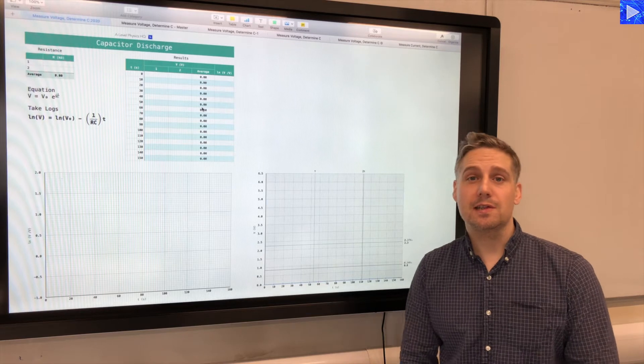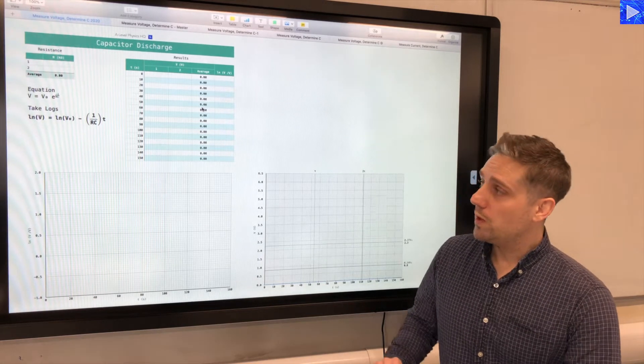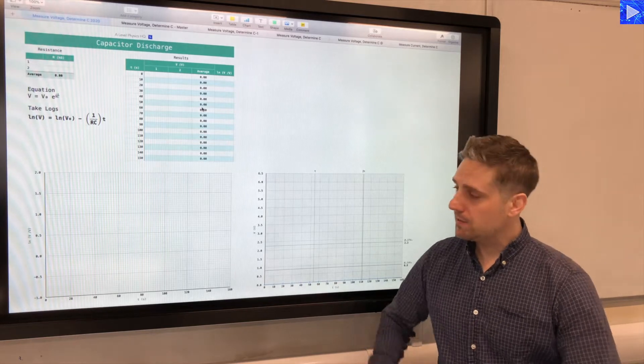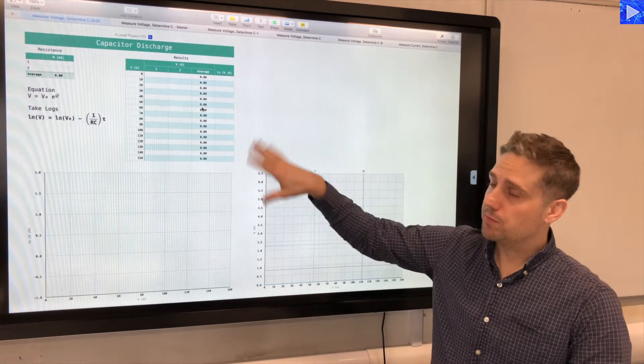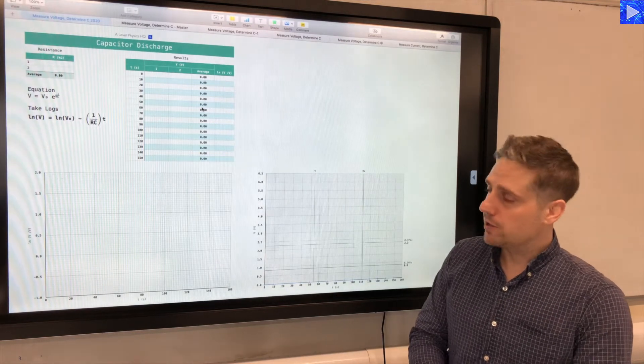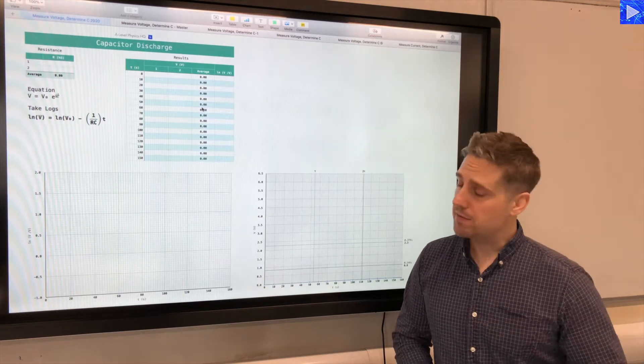Hi there, we're going to be analyzing the data from the capacitor discharge experiment. We will be aiming to calculate the unknown capacitance of the capacitor. We're going to be using this spreadsheet to help us do the calculations and speed things up for us. We're also going to determine the capacitance by two different methods.